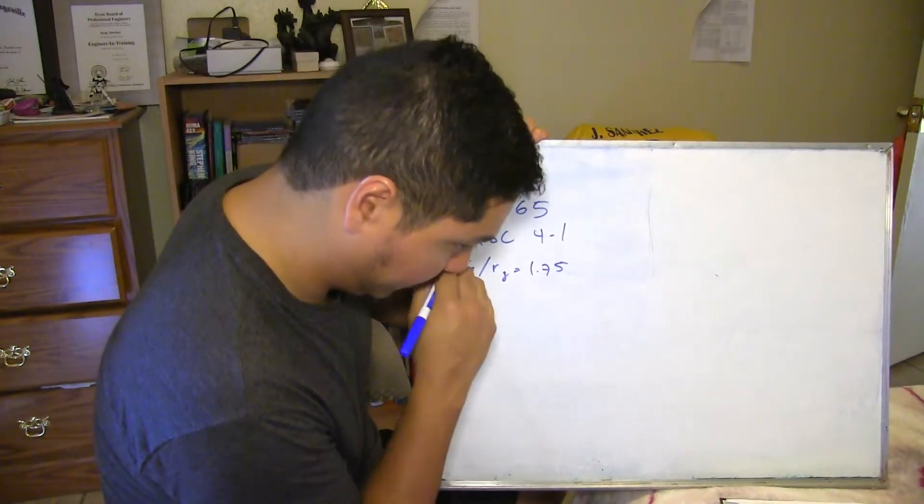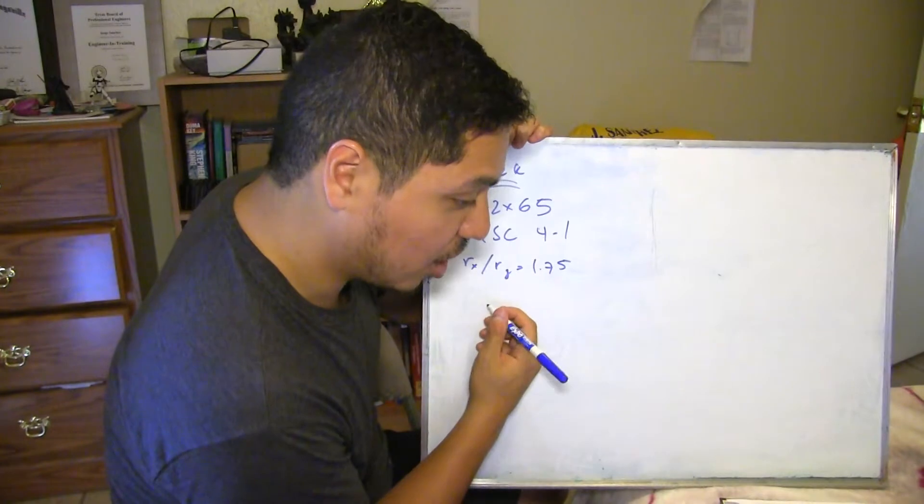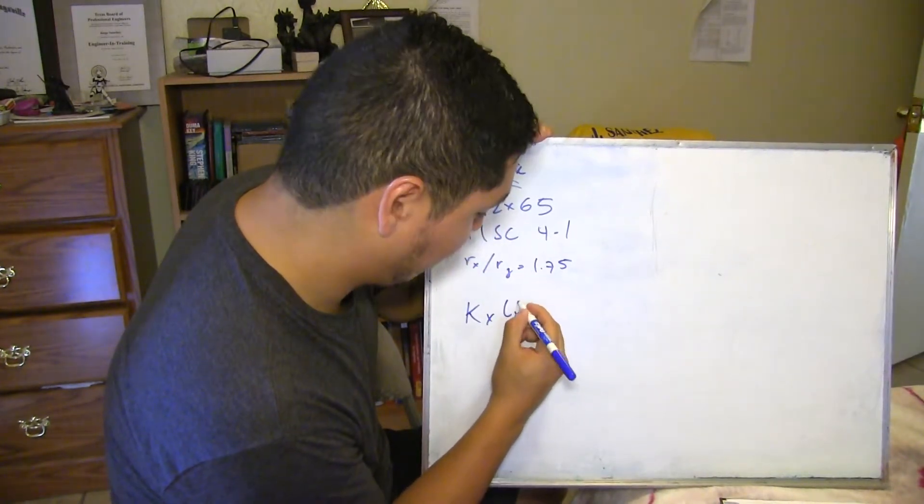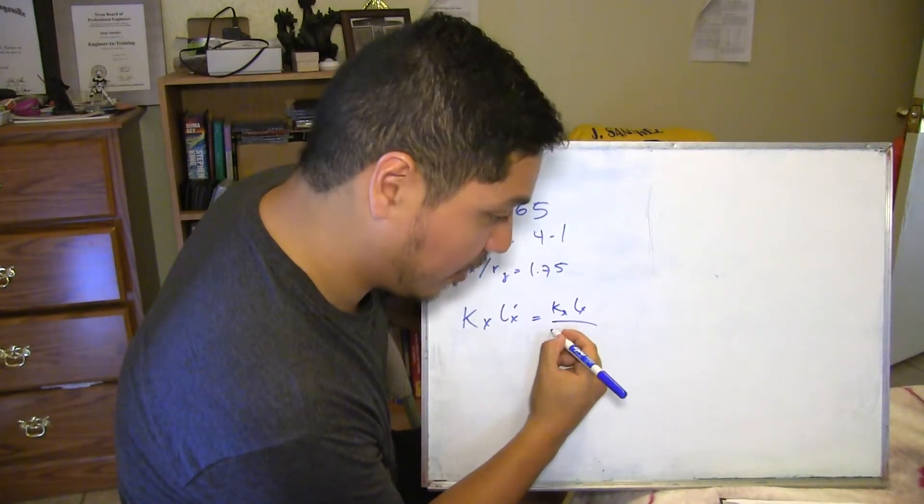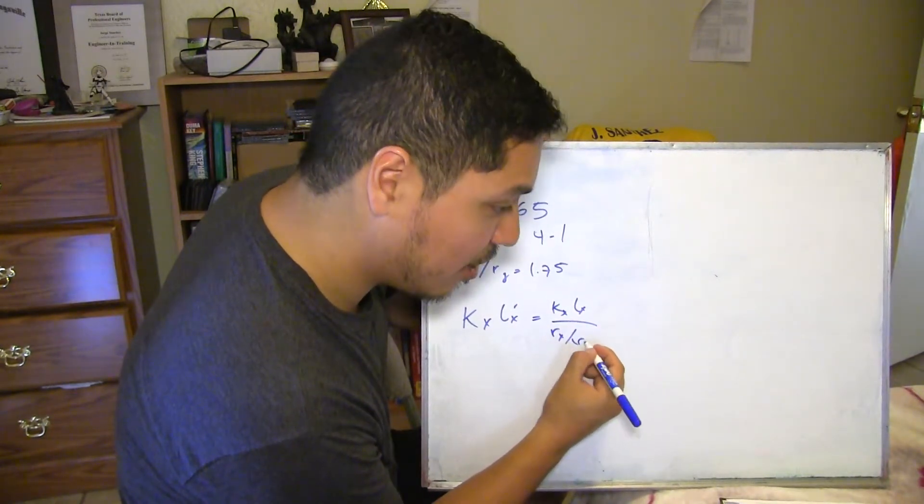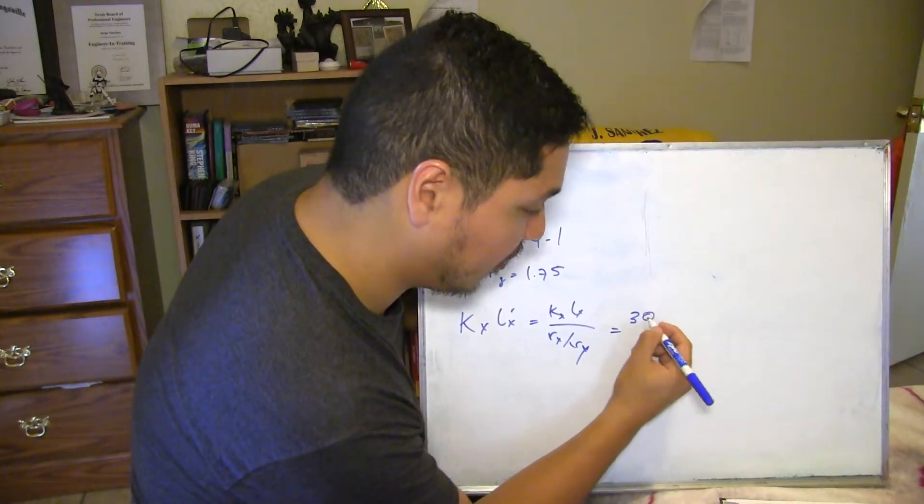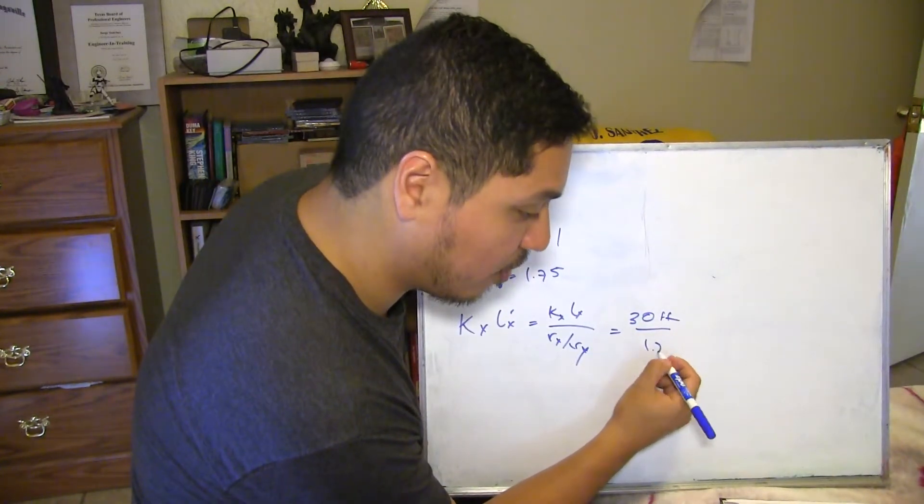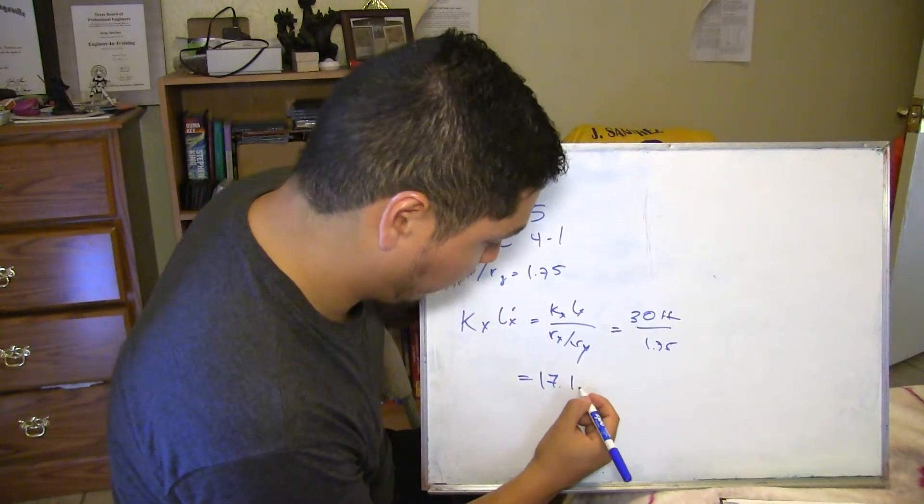We need to double check that. Kx Lx prime. Kx Lx prime. And we're going to be, Kx Lx over Rx Ry. Where is the formula. We're going to have 30 feet over 1.75. And it's going to be equal to 17.1 feet.